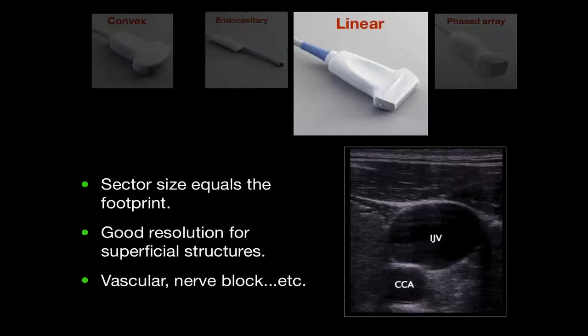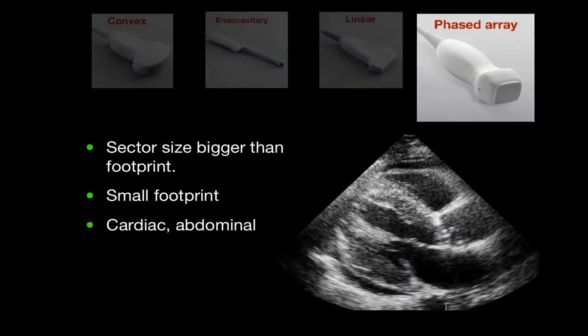The linear probe has a sector size equal exactly to the footprint, is a high-resolution probe, and is used most of the time for vascular imaging or ultrasound-guided procedures. The phased array has a sector size bigger than its small footprint, making it very suitable for small acoustic windows, like viewing the heart in the intercostal space.